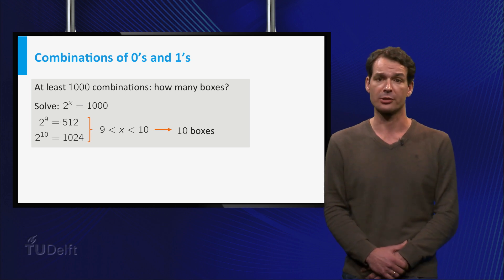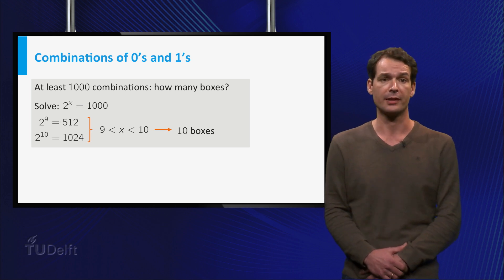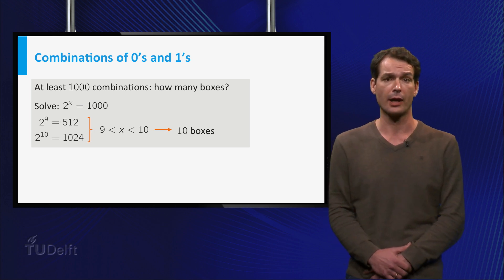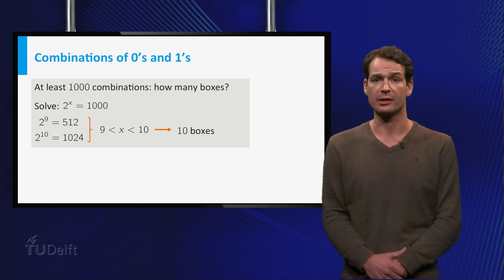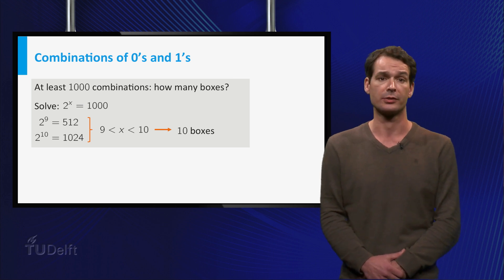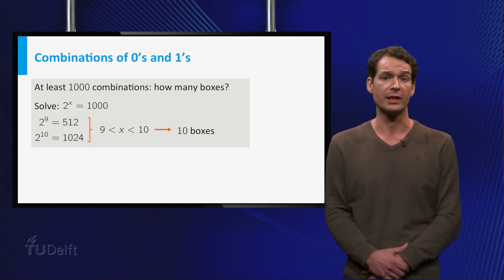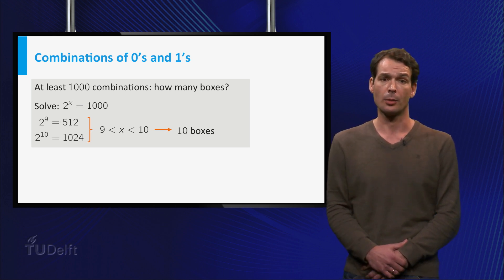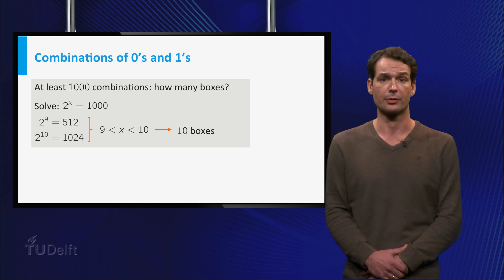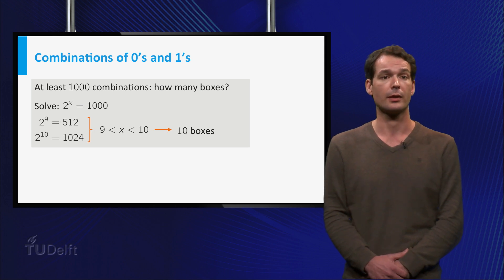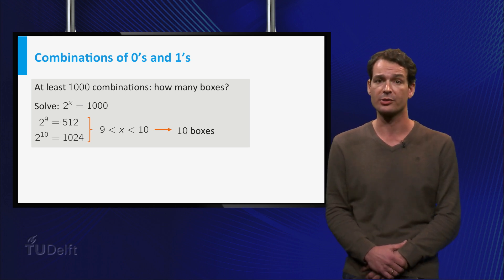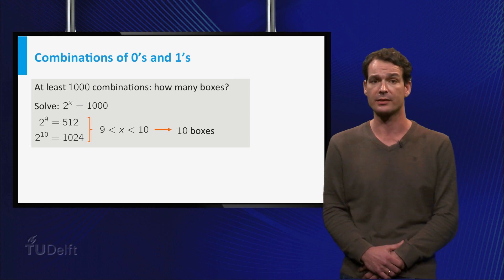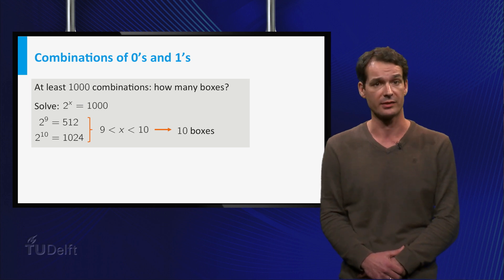Just by trying, you find that 2 to the power 9 is smaller than a thousand, and 2 to the power 10 is larger than a thousand. This means that the number x you are looking for is between 9 and 10, and therefore you need 10 boxes to make at least a thousand combinations.